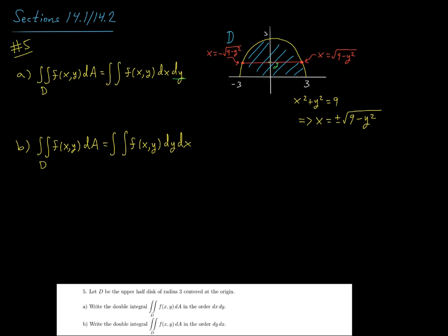So for the bounds, we're going to let x vary from the negative square root of 9 minus y squared up to the positive square root. And then we're letting y vary from 0 to 3.